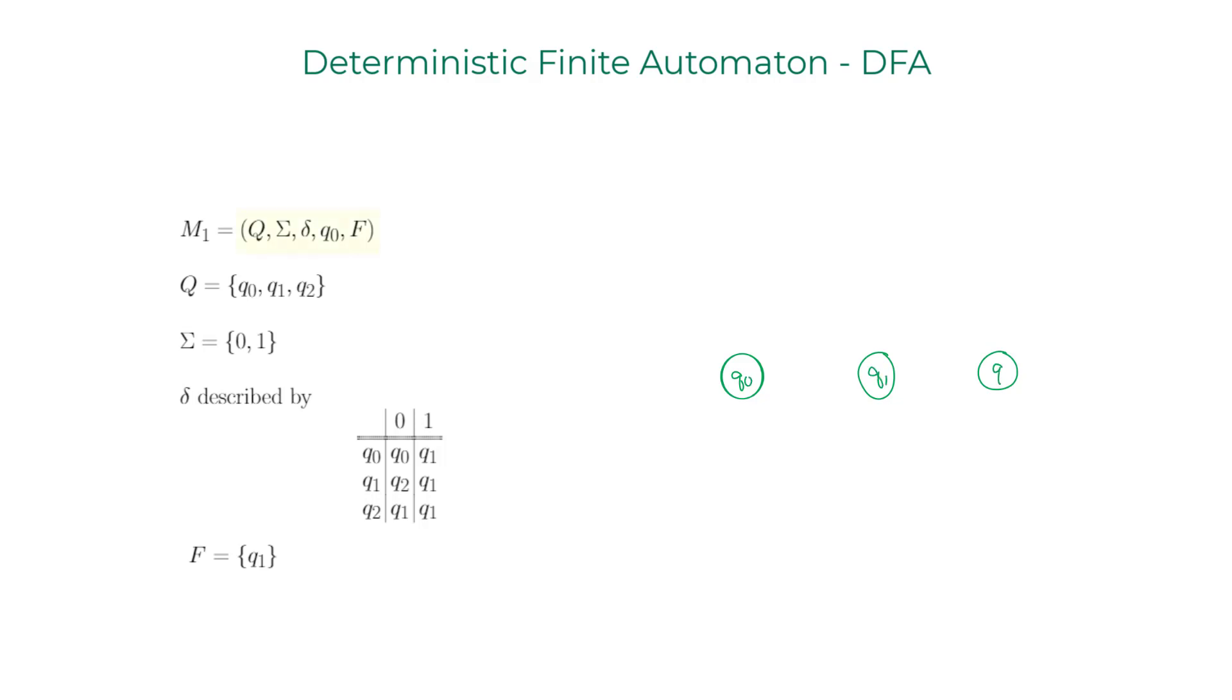Looking at the 5-tuple that I have there, I see that the start state is Q0, so I'm going to draw the pointer there. Now I'm going to switch to the transition table. Q0, when it receives the character 0 from the alphabet, is going to loop back. If it receives character 1, it will go to Q1.